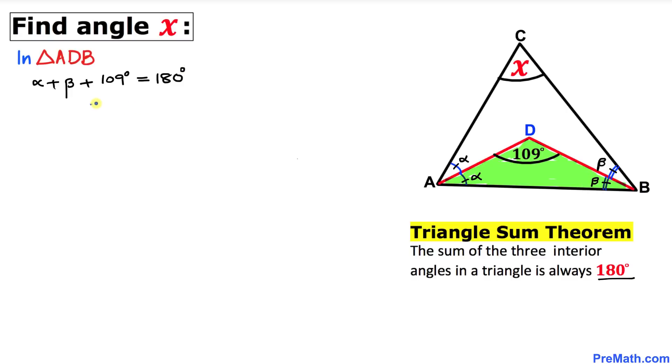Now subtract 109 degrees from both sides. These cancel out, so alpha plus beta equals 71 degrees. Let me call this equation number one.